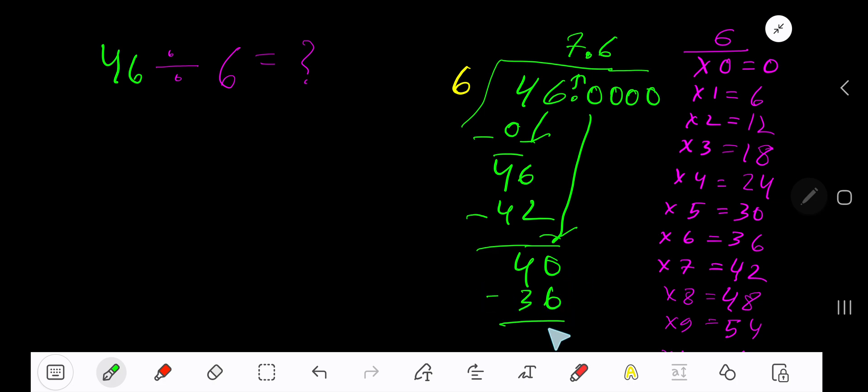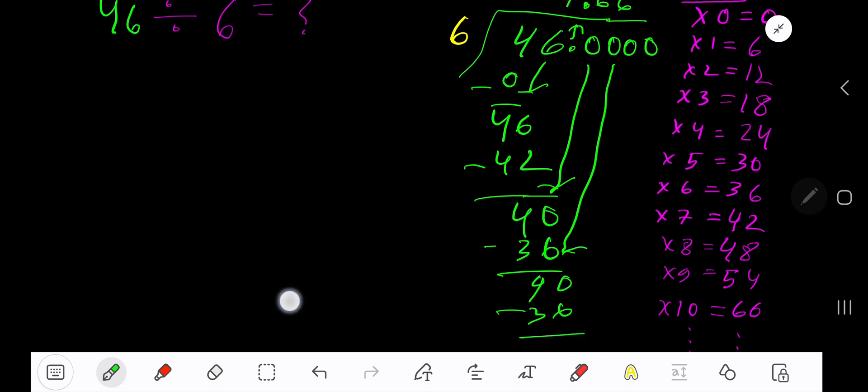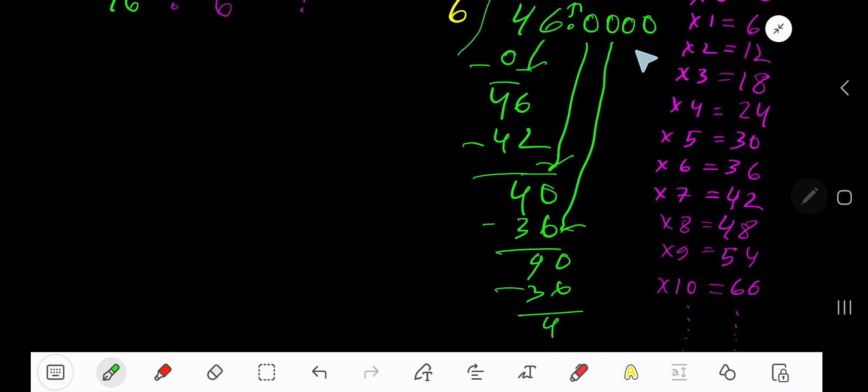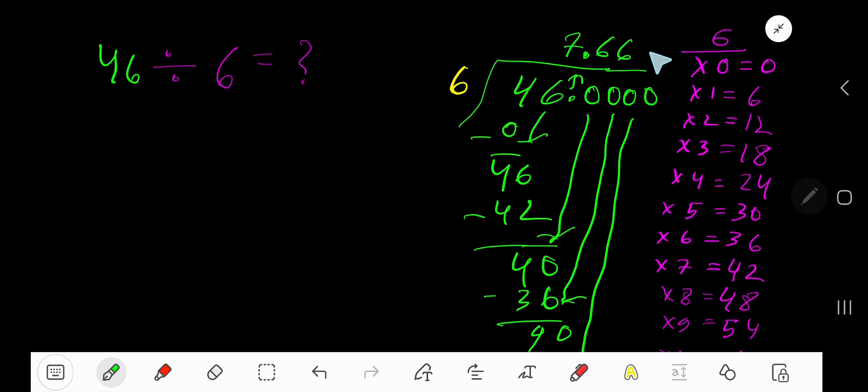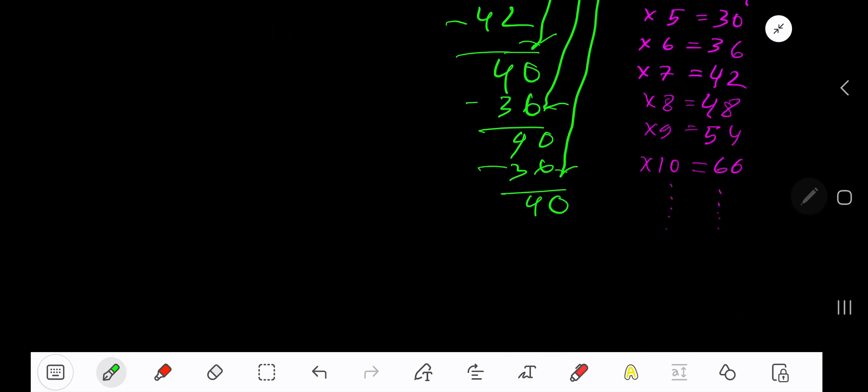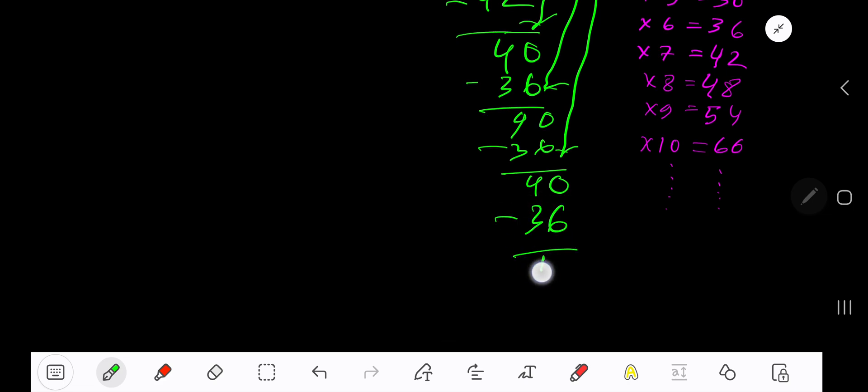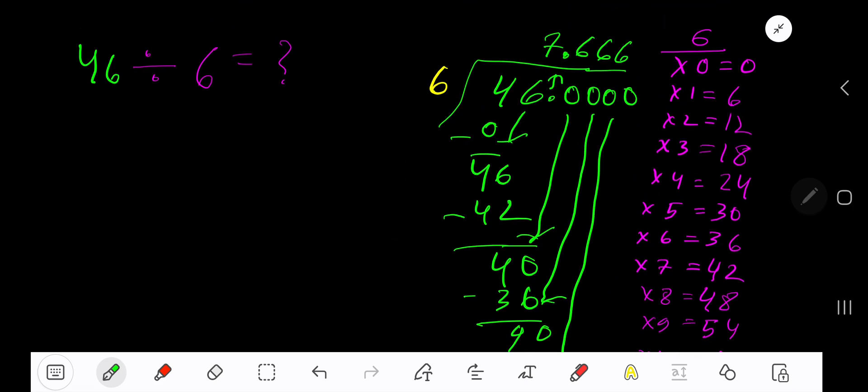Bring down the next 0. 6 goes into 40 how many times? Again 6 times. 6 times 6 is 36. Subtract 4. You can bring down more zeros, but since we have gotten 3 places of the decimal, we can place here 3 dots now.